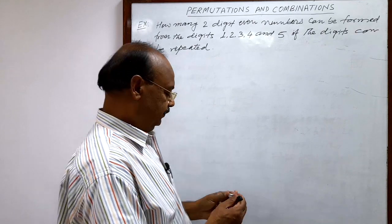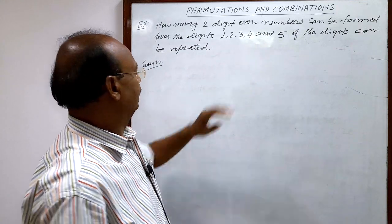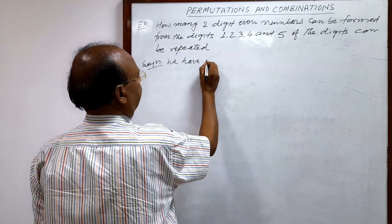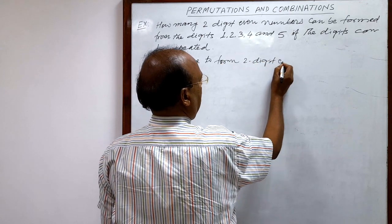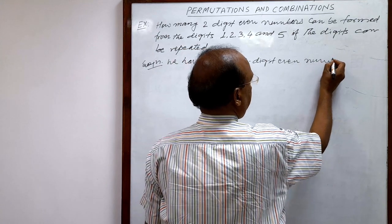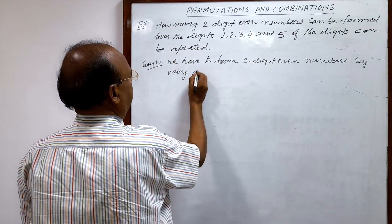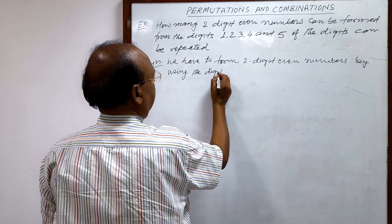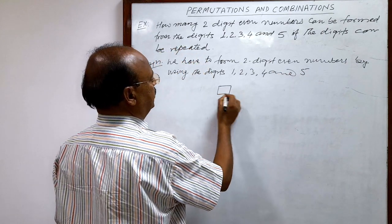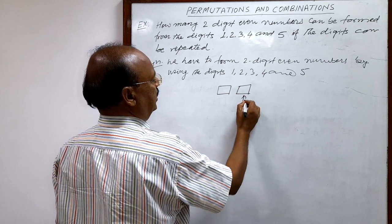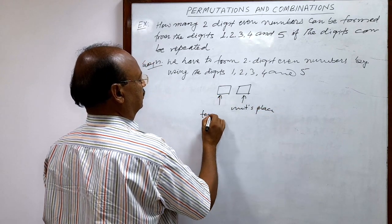So you see the solution — very simple. We have to form two-digit even numbers by using the digits 1, 2, 3, 4 and 5. In a two-digit number, this is the digit at units place and this is the digit at tens place.